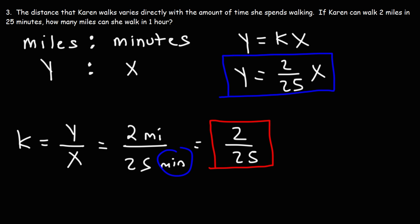Now X has to be in minutes. It can't be in hours. How many miles can she walk in one hour? We need to convert hours to minutes. Fortunately, we know that one hour equals 60 minutes. So all we need to do is plug in 60 into this equation. And that is going to give us the mileage that she can walk in one hour.